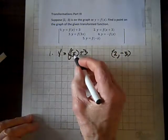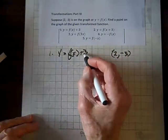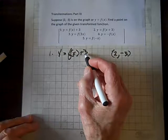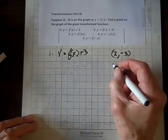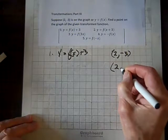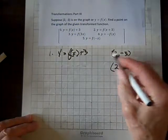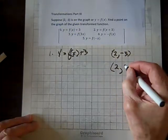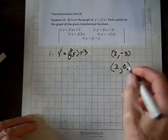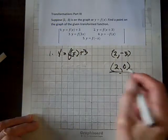So, there's nothing going on with the x coordinate, but we have to add 3 to get to the given y coordinate, and so, 3 minus 3 is 0. So, that's the new point in the transformation.